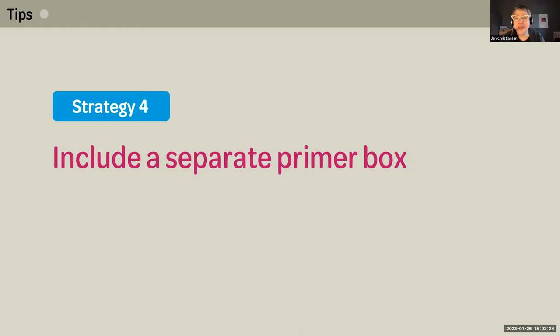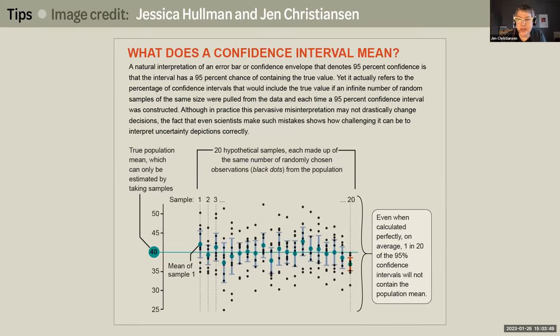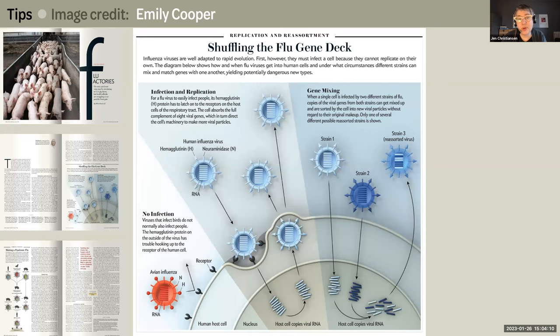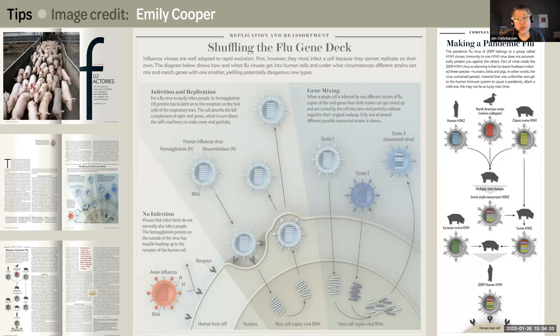Strategy four is to include a separate primer box. If you're torn between the need to provide background material and the desire to get right to it with information on the latest discovery, consider breaking things down into two independent graphics. A primer box can introduce basic concepts to readers who might need more context, so readers more familiar with the topic can then jump straight to the new stuff. We did that with this definition box for an article on uncertainty. Confidence intervals were noted a few times in the text — this textbook-like box allowed us to break the concept down in a glossary-like way, and then use that concept in other charts later in the article. And for an article on pig flu, we presented a basic primer box on how virus replication works. Then we can move on to the specific information related to this particular strain of flu.